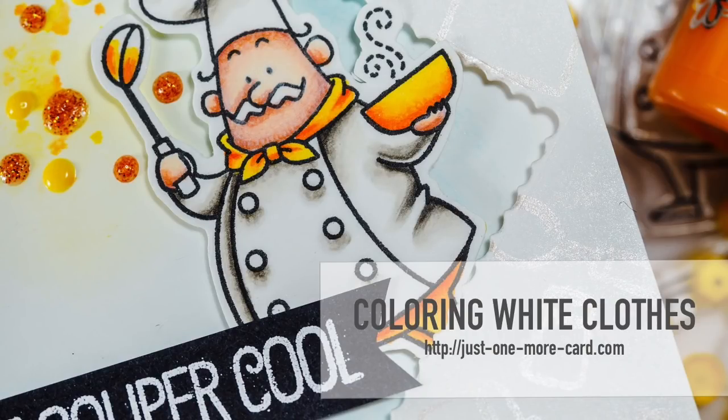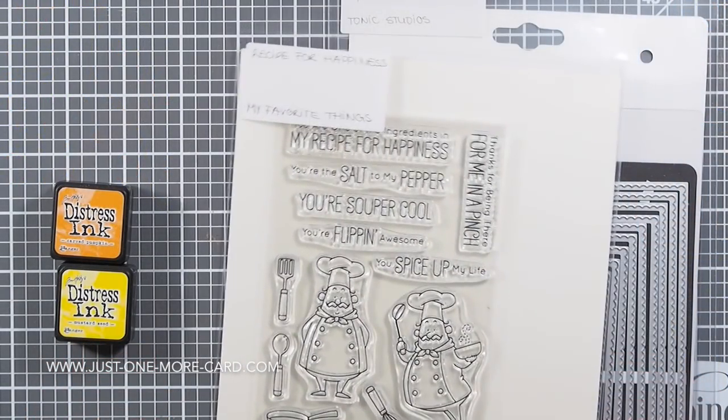Hi guys, this is Julia from Just One More Card and welcome back to a new coloring tutorial. Today we're going to focus on the topic of coloring on white and the Recipe for Happiness stamp set by My Favorite Things.